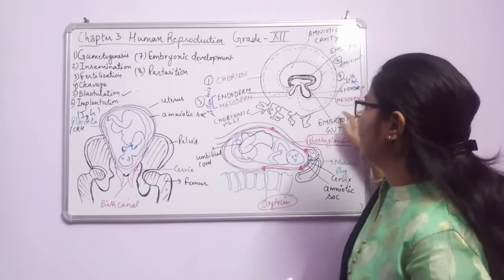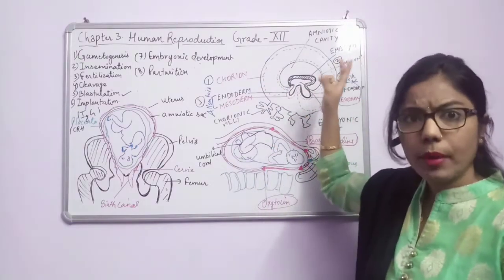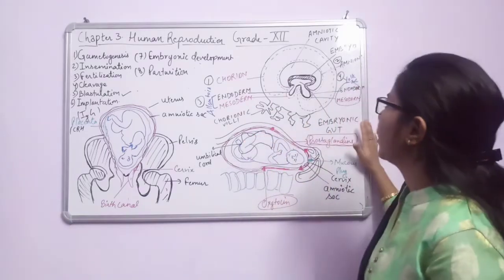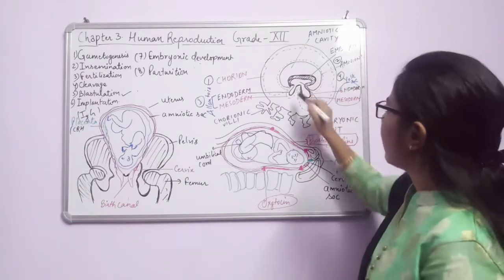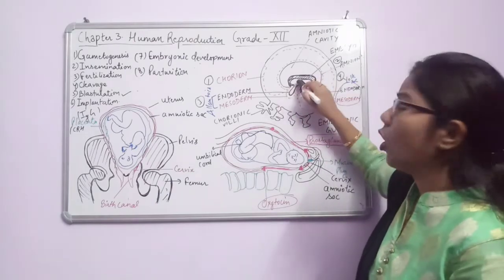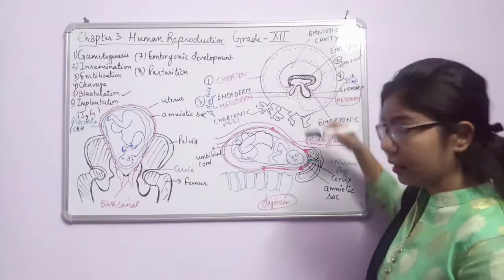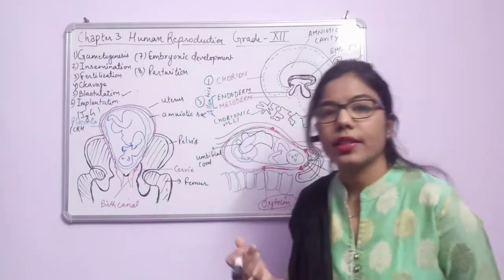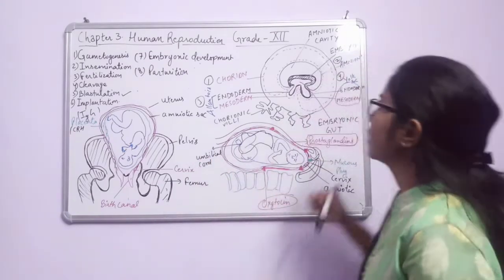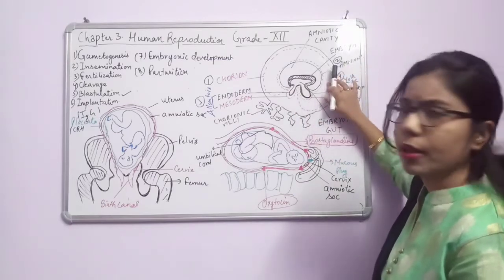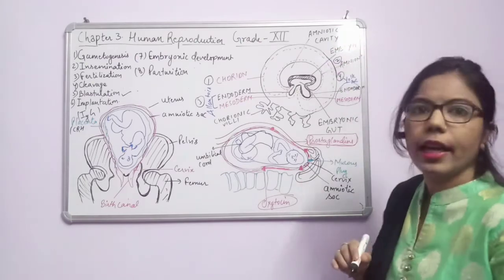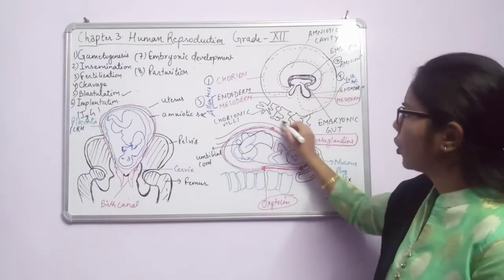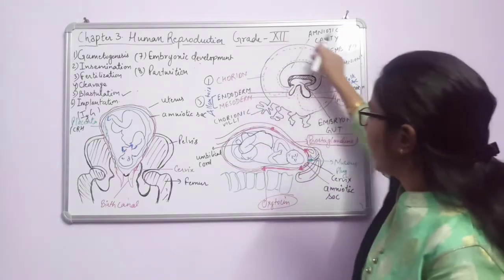In this diagram, we can see that the inner cell mass gets differentiated into three germinal layers: ectoderm, mesoderm, and endoderm. After attaining the blastula stage, gastrulation takes place — the embryo divides into these three germinal layers. The outer layer is ectoderm, the middle layer is mesoderm, and the inner one is endoderm. The chorionic villi are formed by the trophoblast cells surrounding the embryo.